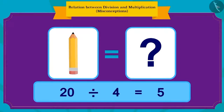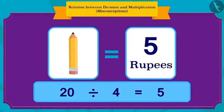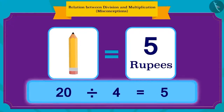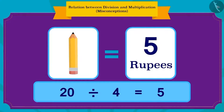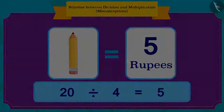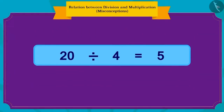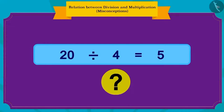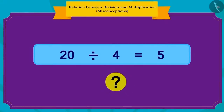Oh yes! Raju and Bablu will need to pay 5 rupees for one pencil. We can find this answer with division like this. Children, how can we write this in terms of multiplication?